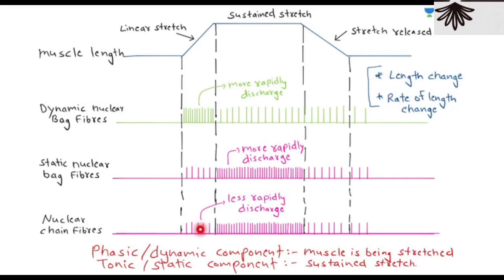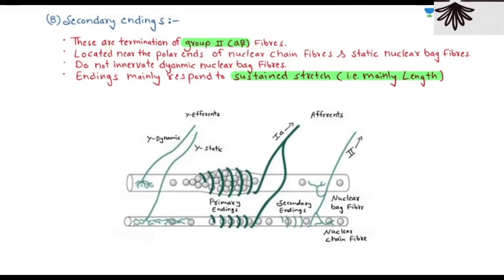We can identify two components: a phasic dynamic component, activated during sudden stretching, and a tonic static component, activated when the muscle is in a sustained continuous stretch. These represent the different responses we have studied.